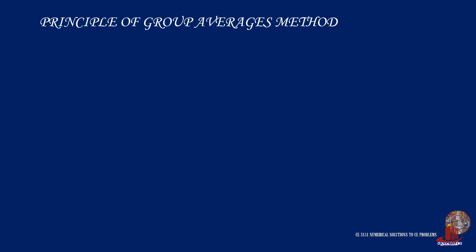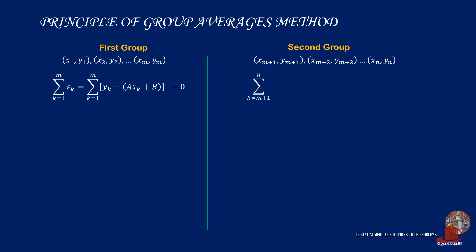Now that we have the first group from the first value of x, x sub 1, until the mid-value x sub m, and the rest of the points are considered under the second group, they are from the next point x sub m plus 1 to the last point which has x sub n. We can say the summation of errors in the first group can be computed as y minus f of x, or ax plus b. And since we are minimizing the errors, this is equated to zero. The same procedure is done to the second group.